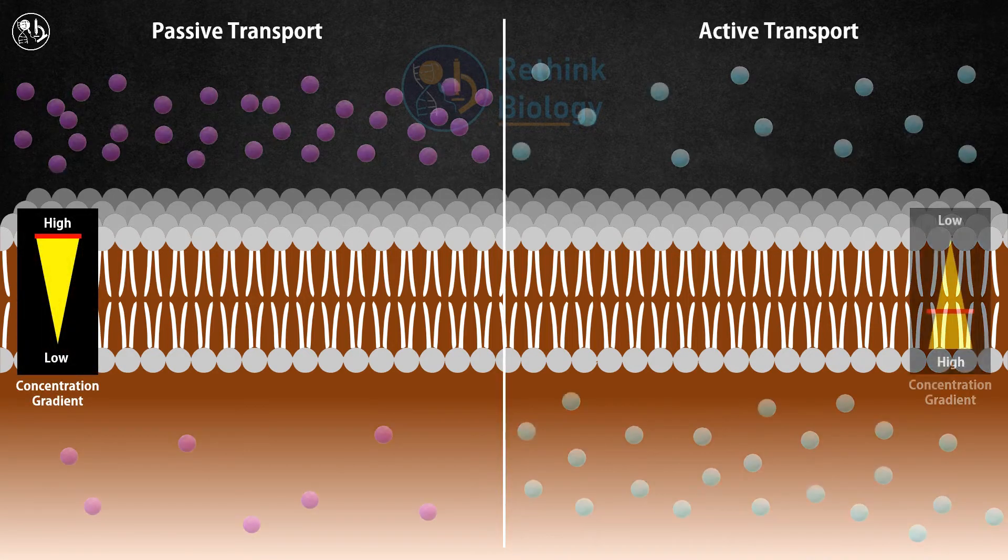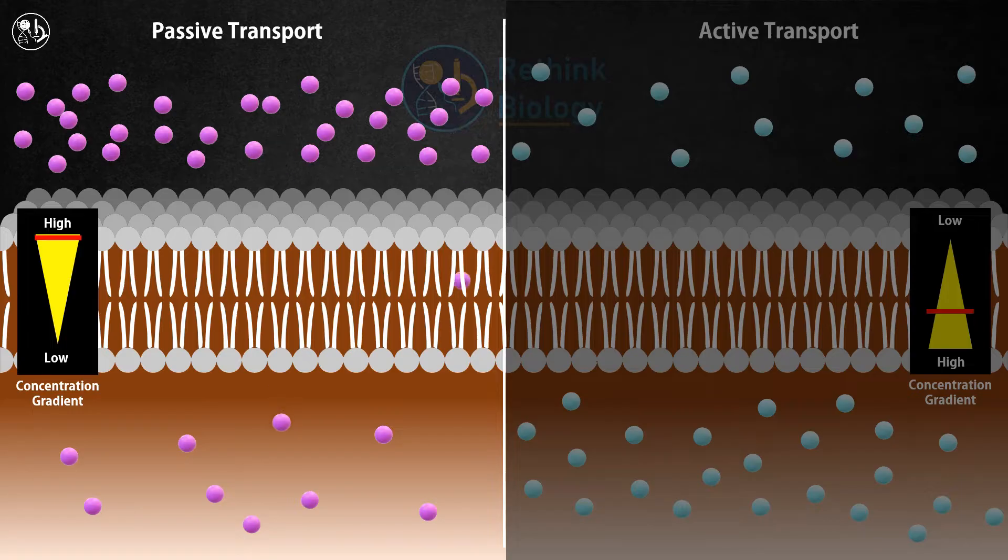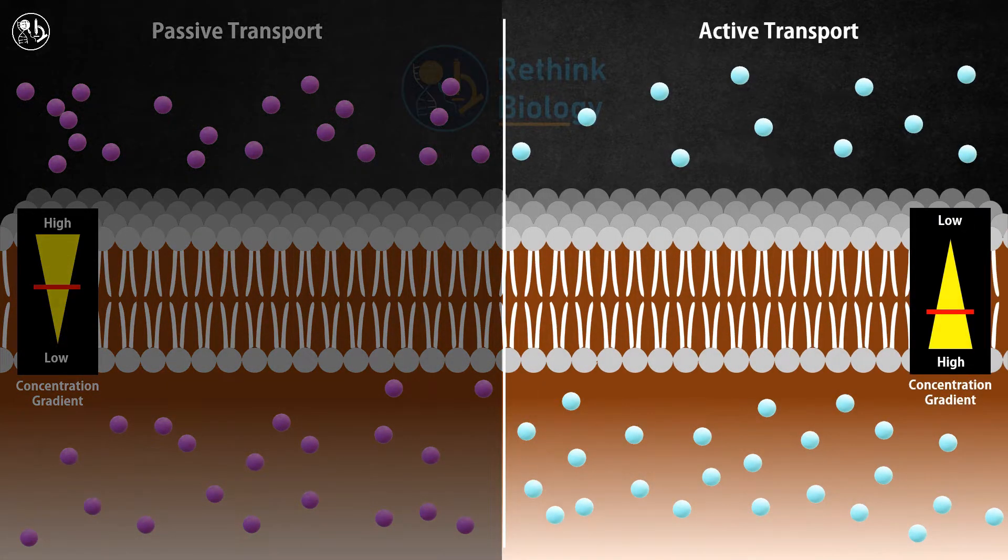In passive transport, substances move from an area of high concentration to an area of low concentration without using energy. In active transport, energy is required to move substances against their concentration gradient.